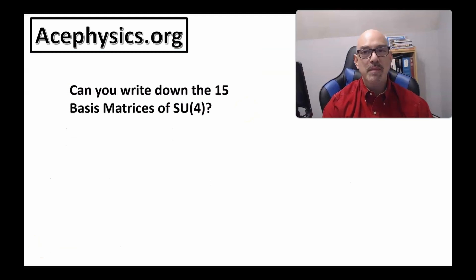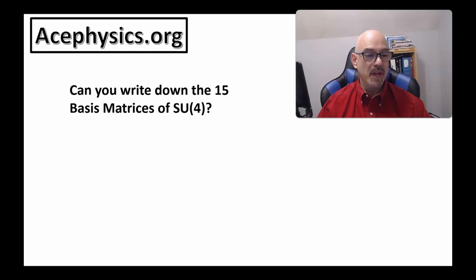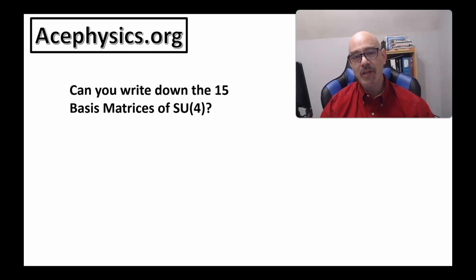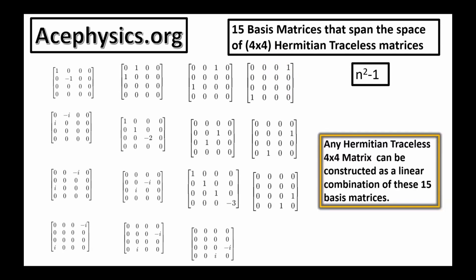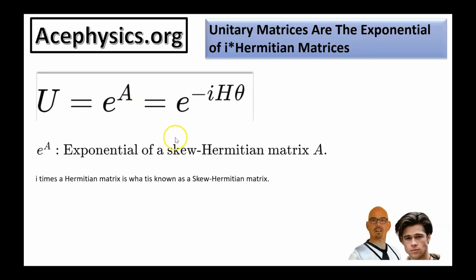Can you write down the 15 basis matrices of SU4? If you can, you're on your way to being a quantum mechanics expert. Here are the 15 basis matrices that span the space of 4-by-4 Hermitian traceless matrices. Any Hermitian traceless 4-by-4 matrix can be constructed as a linear combination of these 15 basis matrices.